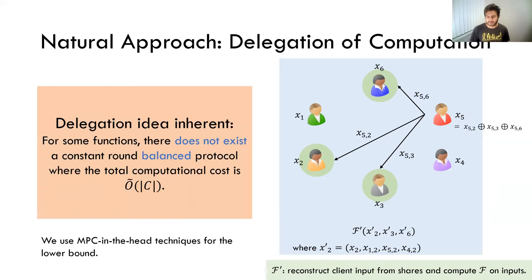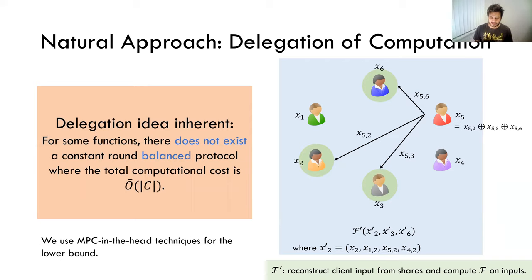It's clear that the servers seem to be doing substantially more work than the clients. We actually show that this kind of imbalance is inherent. Specifically, we show that if you want a protocol where the total computation cost is O-tilde C — which our three-round semi-honest protocol achieves — then there are some functions for which there does not exist a constant-on-balance protocol. We show this in our paper using MPC-in-the-head techniques for these lower bounds. So this delegation of computation seems inherent in some sense.